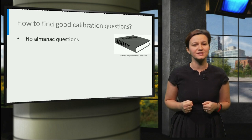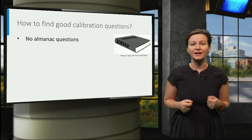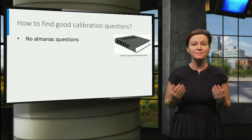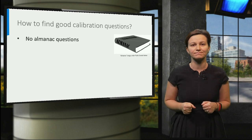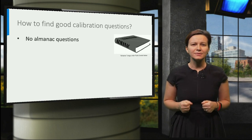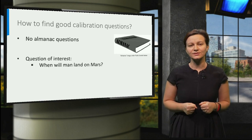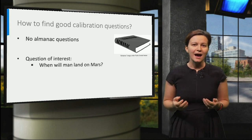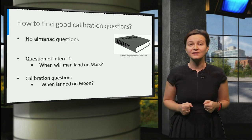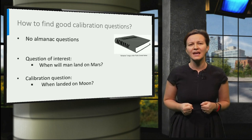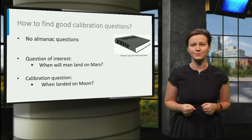Finding good calibration questions is a crucial step in any expert judgment study. A very important role is that calibration questions should not be almanac questions — those that regard information which can be easily recalled by experts. This is of course domain specific, but to give a silly example: consider the question of interest, when will man land on Mars? The question of when man landed on the Moon would be a question which every expert, and probably non-expert, would know, and will therefore not be an appropriate calibration question.